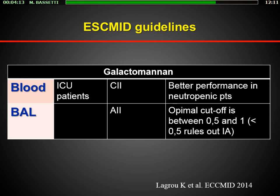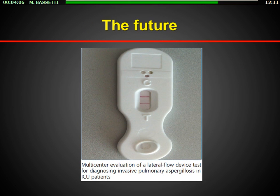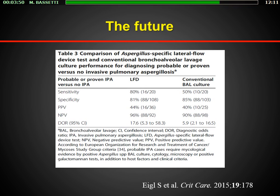The optimal cutoff for BAL galactomannan is between 0.5 and 1; less than 0.5 rules out invasive aspergillosis. A very interesting future option is the lateral flow device test, recently published in Critical Care. You place it in the BAL and have an answer in half an hour. Studied by Austrian colleagues, it showed sensitivity of 80%, specificity of 81%, and a negative predictive value of 96% compared to conventional BAL culture — a useful point-of-care test for direct use in the ICU.